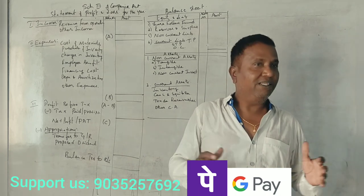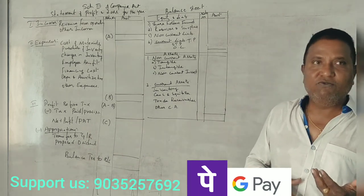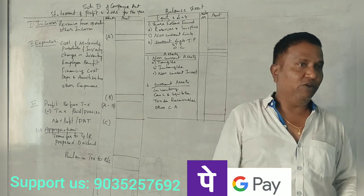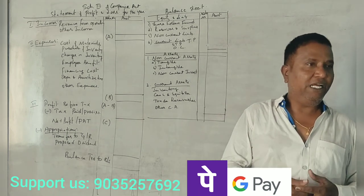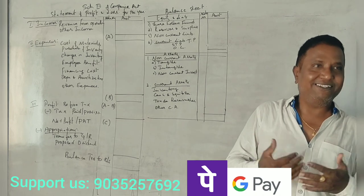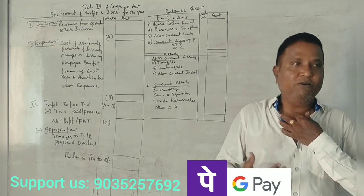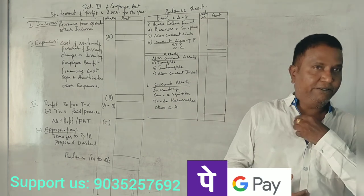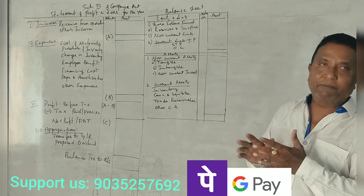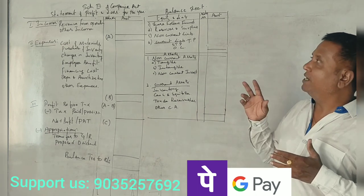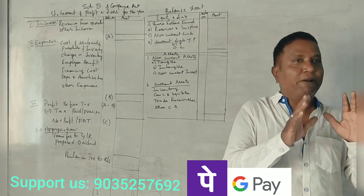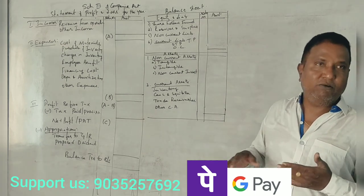The topic is final accounts of companies. What is final accounts of companies? For the period April to March or January to December, in the business we look at profit, losses, assets, liabilities, financial position, and profitability position. All companies prepare these statements as per Companies Act 2013, Schedule 3, where the format for statements is prescribed.